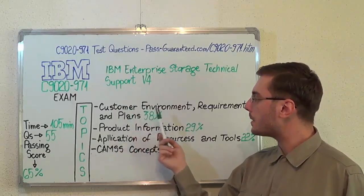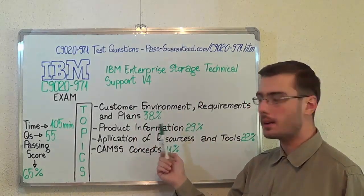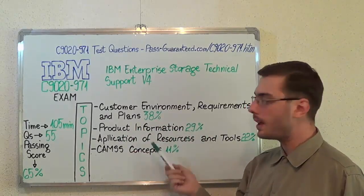The first one, Customer Environment, Requirements and Plans, with 38%. Second, Product Information, with 29%.